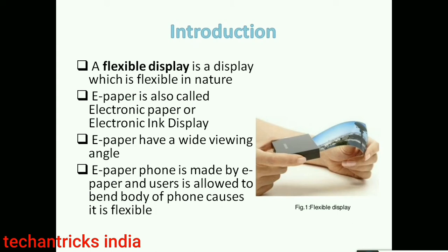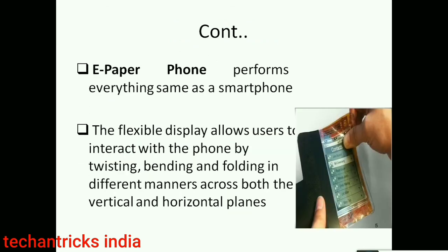Introduction: a flexible electronic paper display is a display which is flexible in nature. E-ink paper display is electronic paper or e-ink display. The full form of e-paper display is electronic paper. The e-paper has a wide viewing angle, and e-paper phones are made up of e-paper, allowing the user to bend the screen — so we can say it is a flexible display.